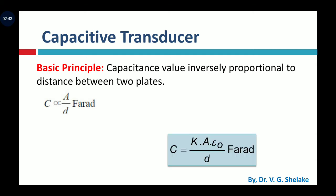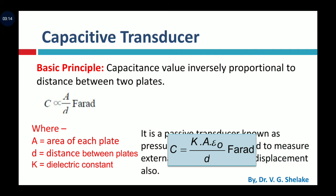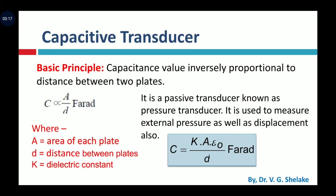The capacitor equation is C = K·A·ε₀ / D, measured in Farads, where K is the dielectric constant, A is the area of the plate, D is the distance between the plates, and ε₀ is the permittivity of free space or the dielectric medium. Using this, we construct the transducer, but it requires an external source — hence it is one of the passive transducers.